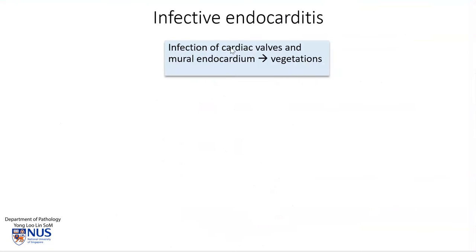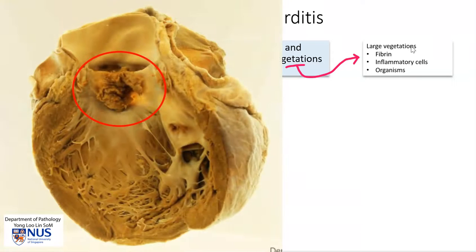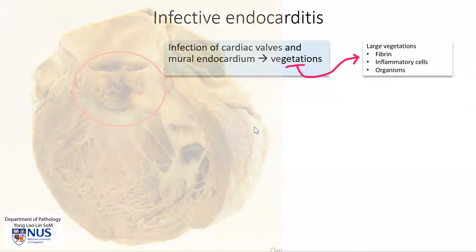Infective endocarditis is defined as infection of the cardiac valves, as well as sometimes the mural endocardium, giving rise to vegetations. These vegetations are usually large — larger than in other conditions such as autoimmune disease — and are comprised of fibrin, inflammatory cells, as well as microorganisms, most frequently bacteria, but sometimes fungal organisms as well.